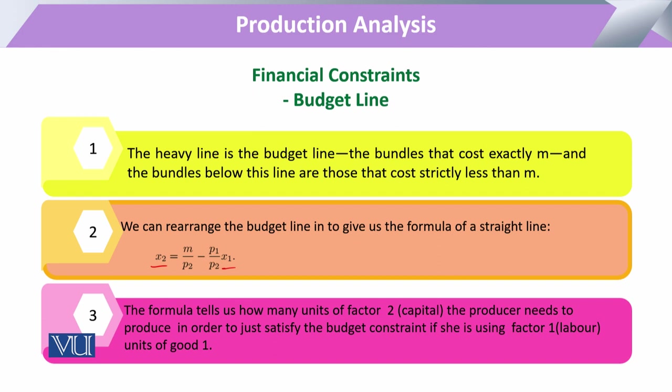If we explain in another manner, we had c was equal to WL plus RK. If we have to check what will be the value of RK, we will have c minus WL, and from there if we want to calculate the amount of capital required by the producer.